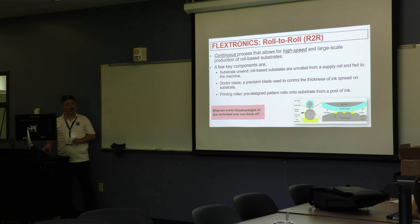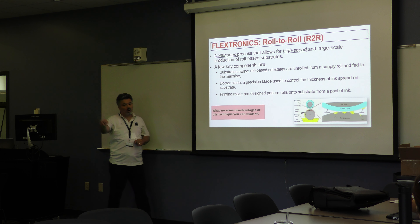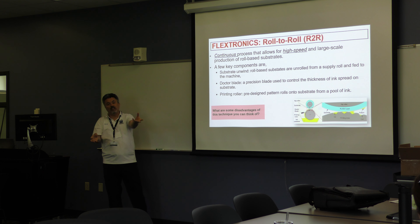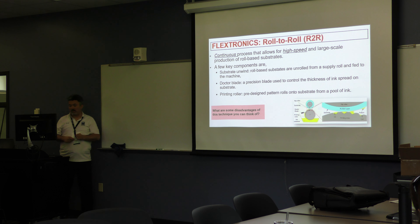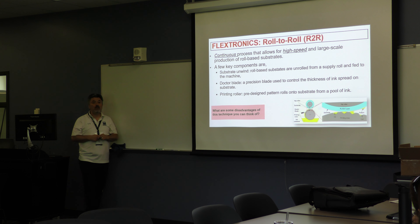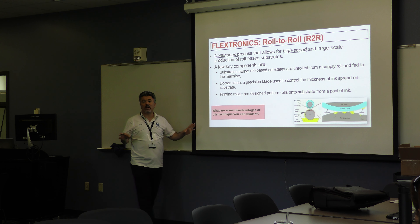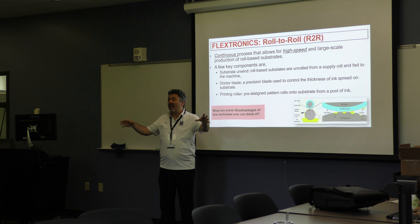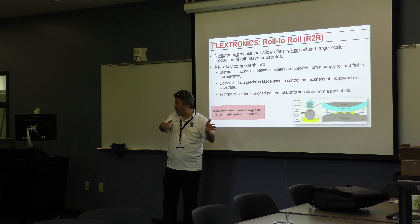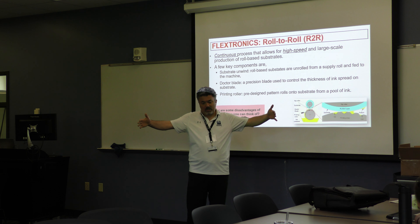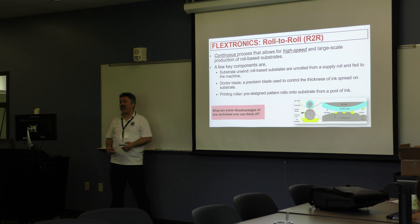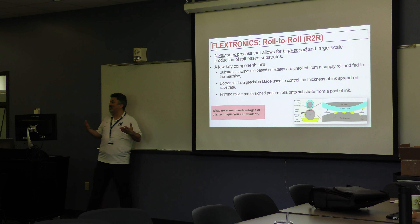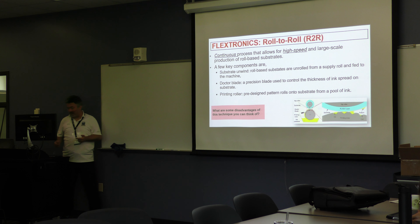Roll-to-roll systems use rolling discs to transfer ink in patterns, with many variations available. This is an industrial process — most university labs won't have roll-to-roll because the capacity is very high and the equipment is sizable, though tabletop versions as small as five or six feet exist. Even a small system can produce hundreds of sensors per hour.